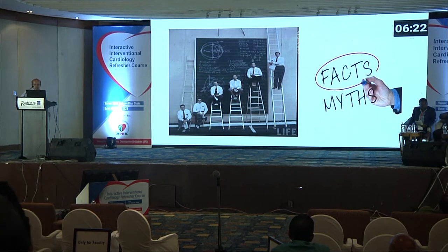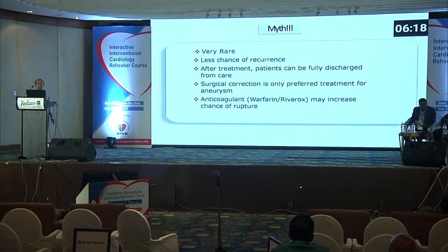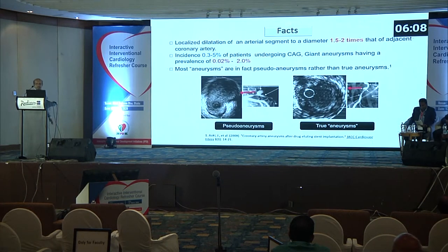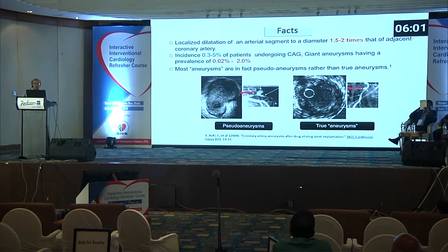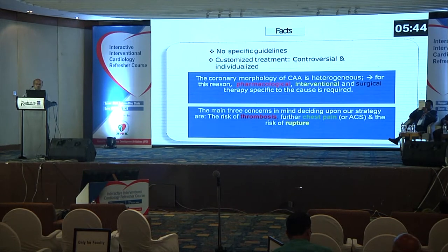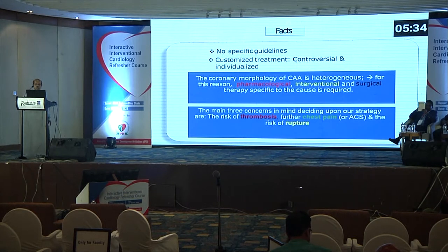There are some facts and myths of coronary artery aneurysm. The myths are: very rare, less chance of occurrence, and surgical correction is the only preferred treatment. The fact is: coronary artery aneurysm occurs when the coronary artery dilates 1.5 to 2 times the adjacent coronary artery. Its incidence is less than 5%, and giant coronary artery aneurysm incidence is less than 2%. The basic treatment, as it is of heterogeneous origin, requires pharmacological, interventional, and surgical therapy specific to each case.